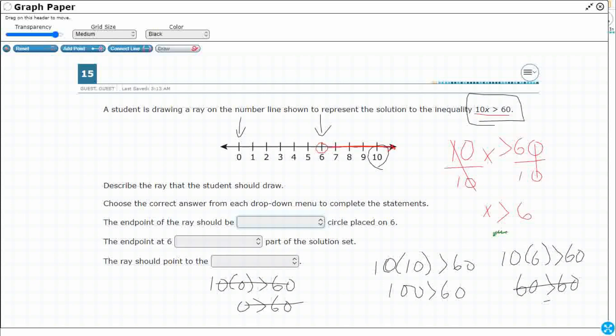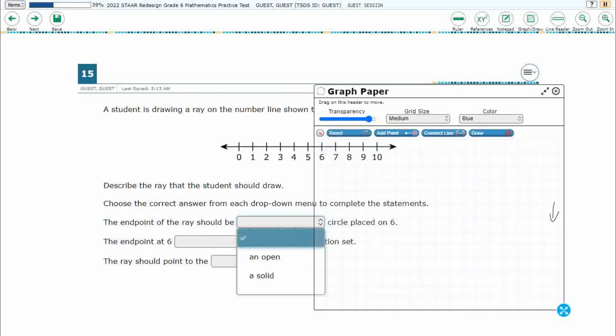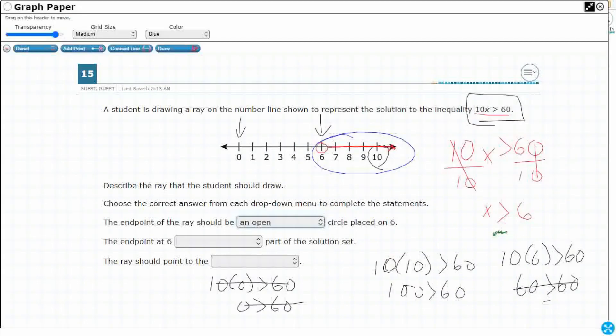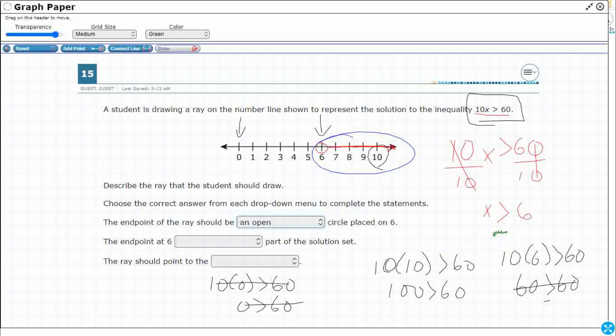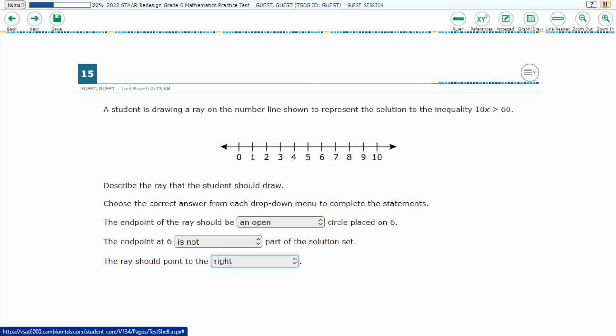So it looks like I'm good right here. Now I just need to translate this into the actual answer. Okay, so the endpoint of the ray should be blank circle. Let's see. Well, I did an open circle. If I wanted to do the greater than or equal to, what I would do here is I would draw, like if I did that right here, I would do that with a closed circle. That means include 6, but it's an open circle. The endpoint at 6 is not - that's what the open circle means. It's not part of the solution set because 6 doesn't work. And the ray should point to the right because it's going to be greater than. So those are my three answers.